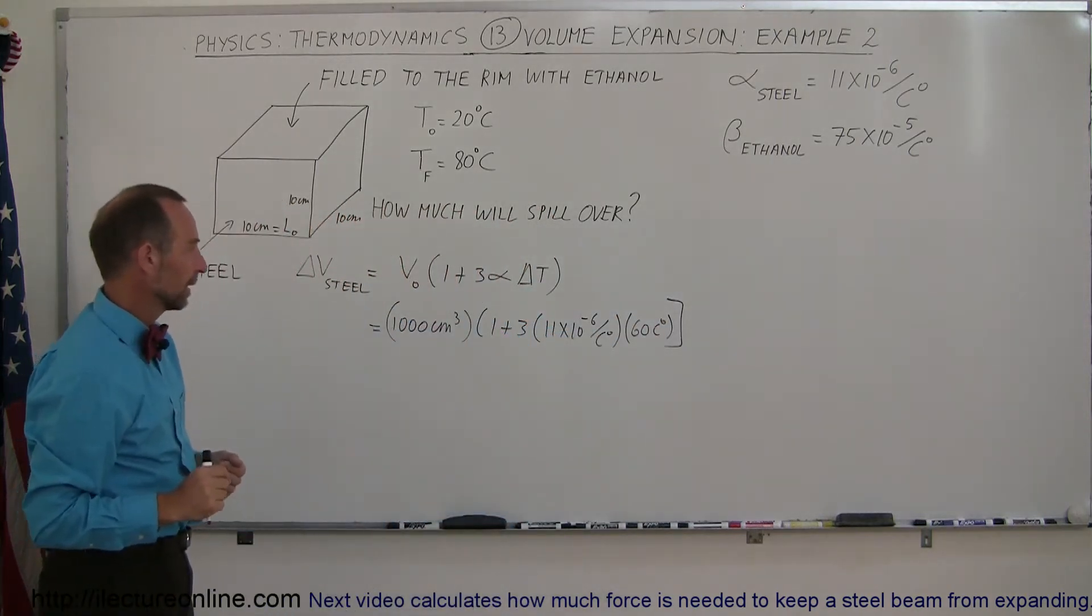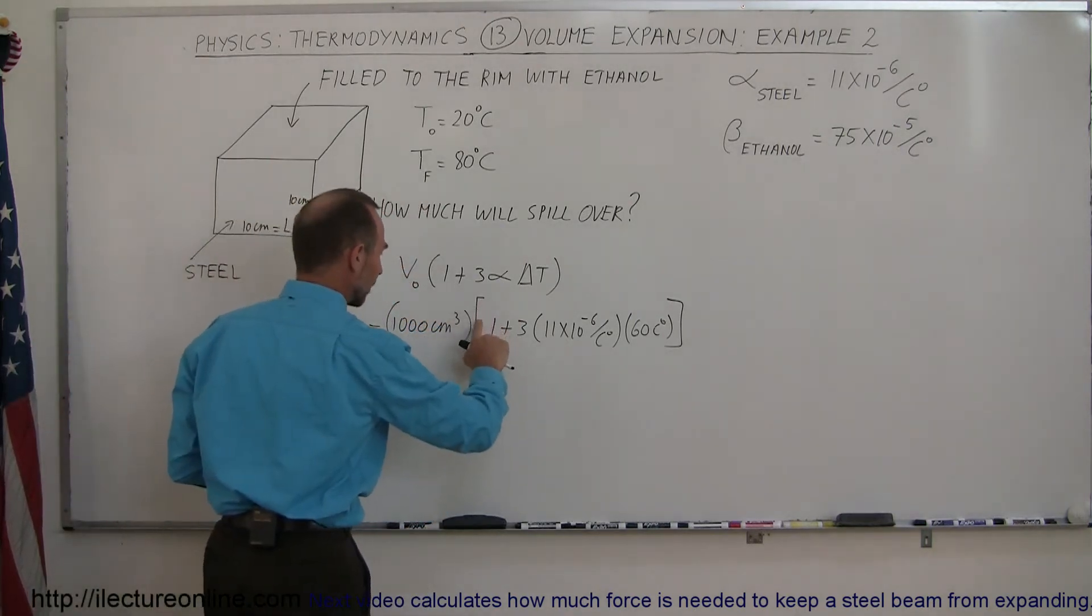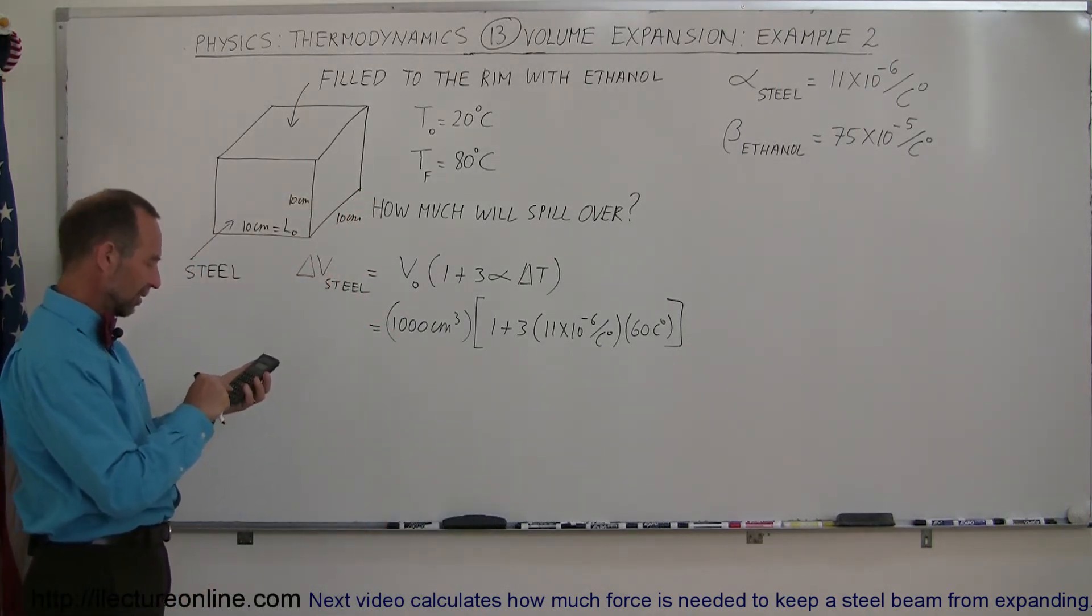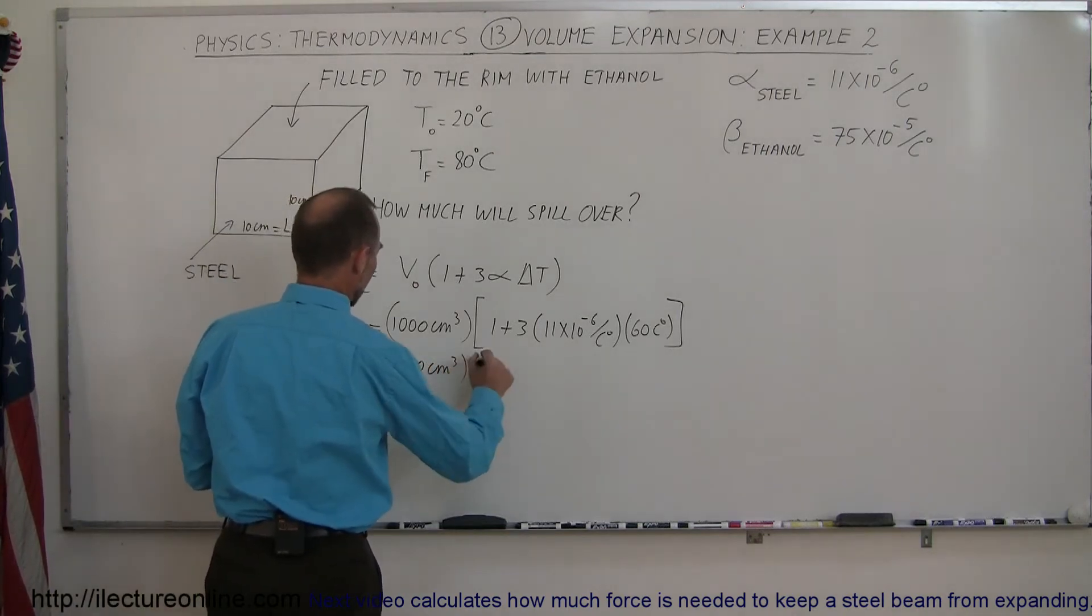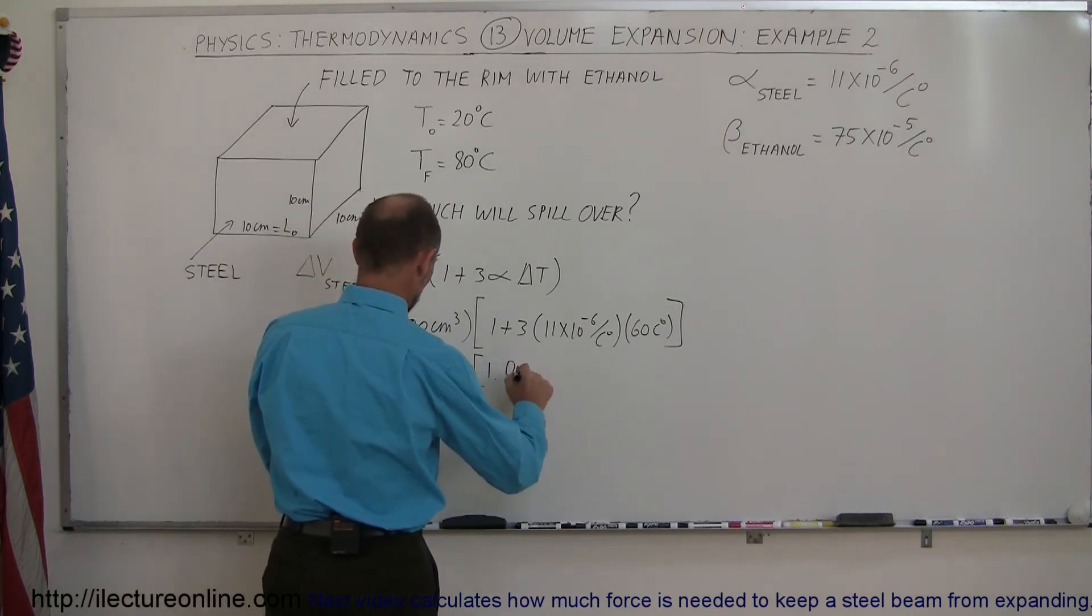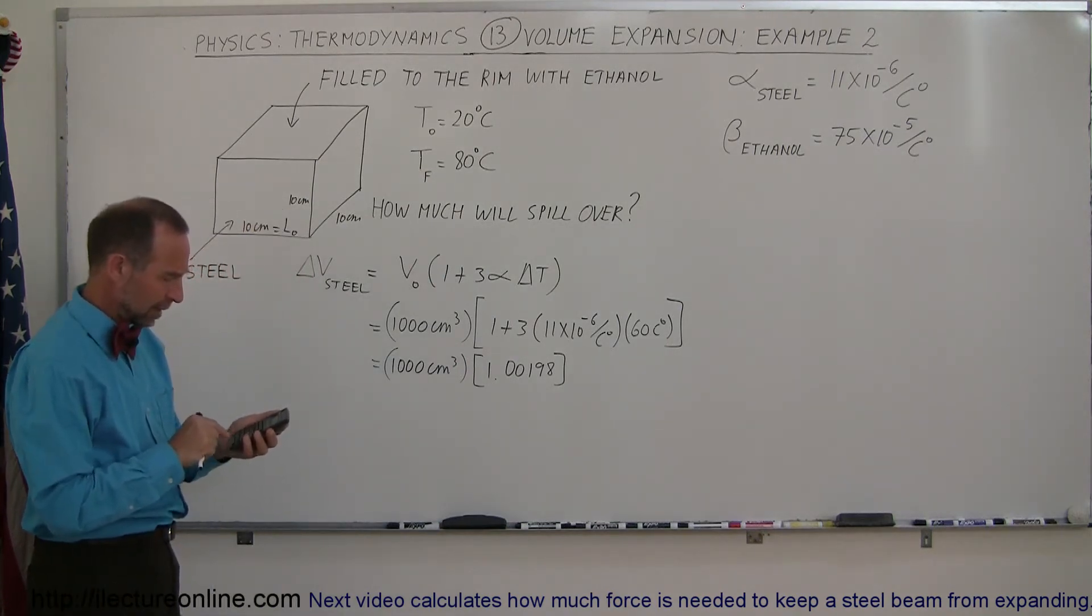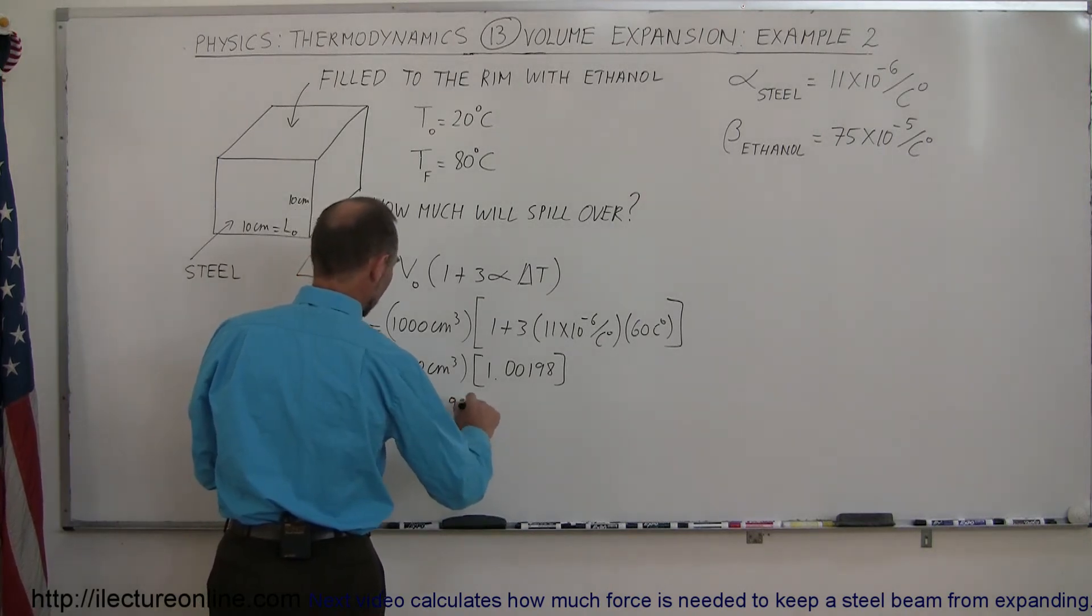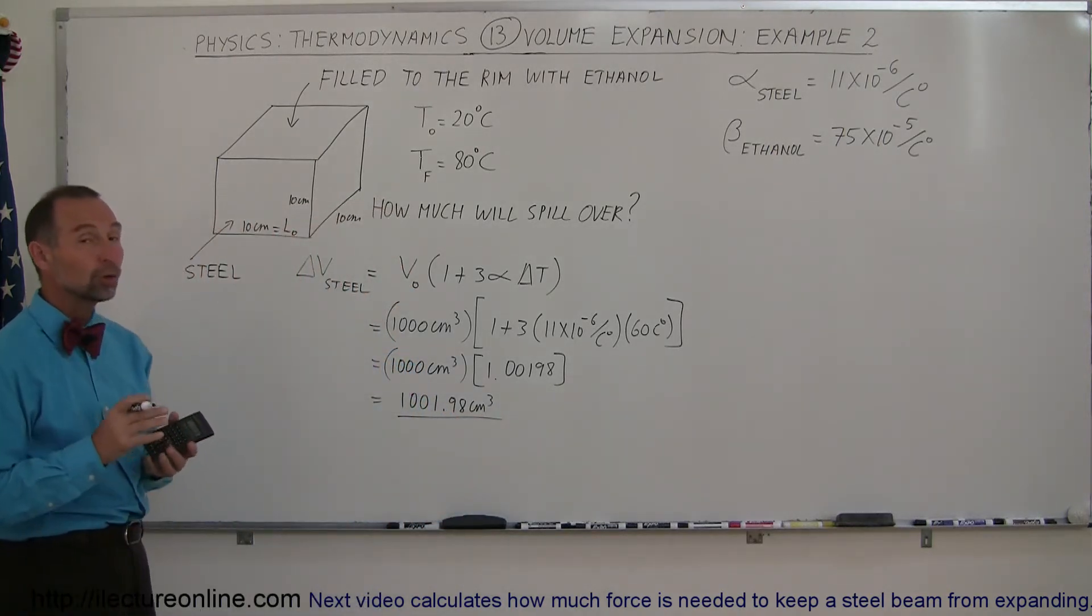I think I need a bracket right here. There we go, that's better. So 11E6 minus times 60 times 3 plus 1 equals. So that would be equal to 1,000 cubic centimeters times 1.00198. So multiply times 1,000 equals, and so that would be equal to 1,001.98 centimeters cubed. So in essence, the increase of the box in volume is about 2 cubic centimeters.